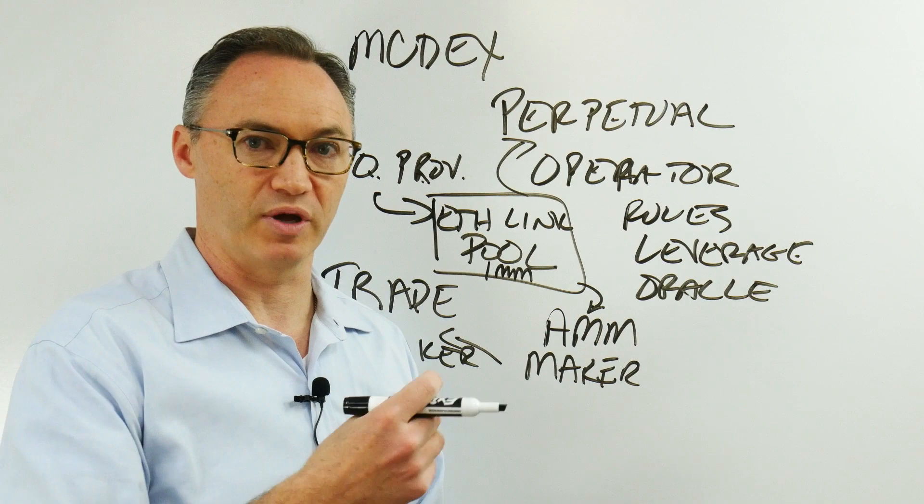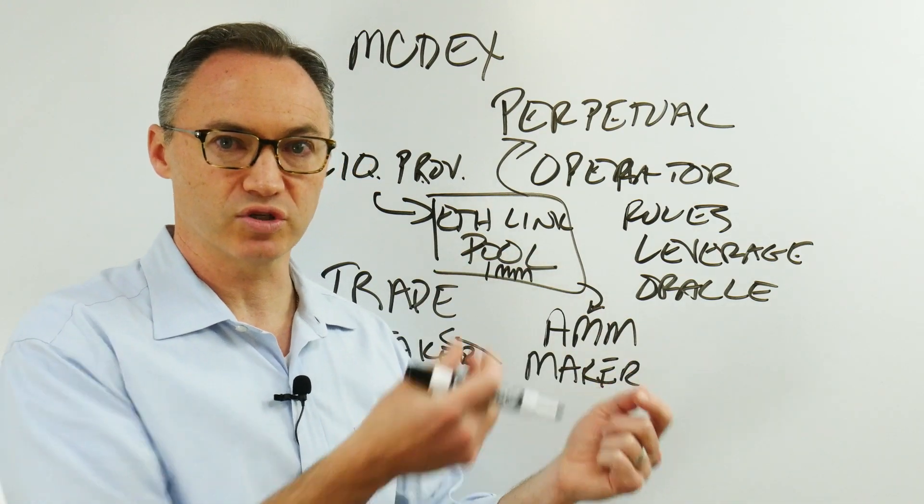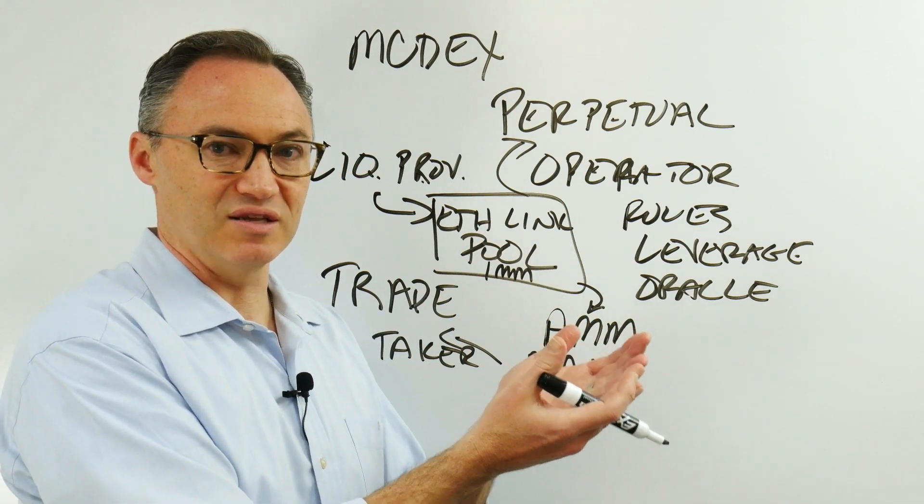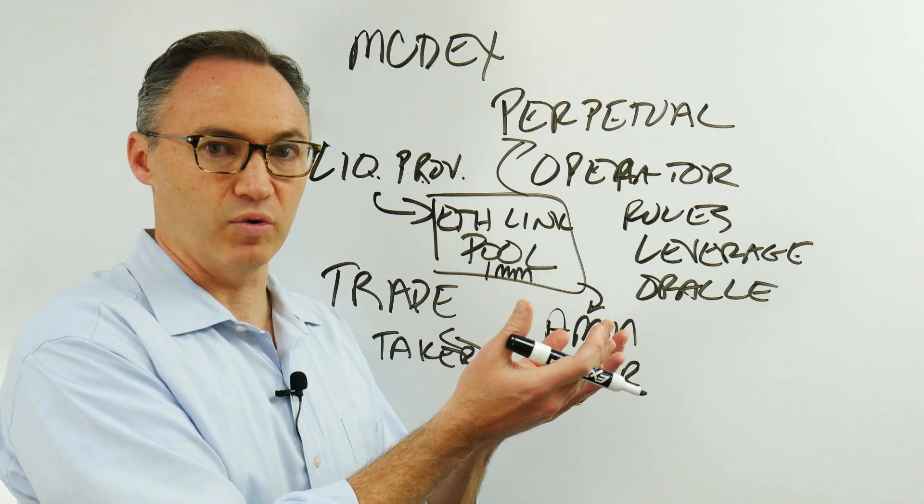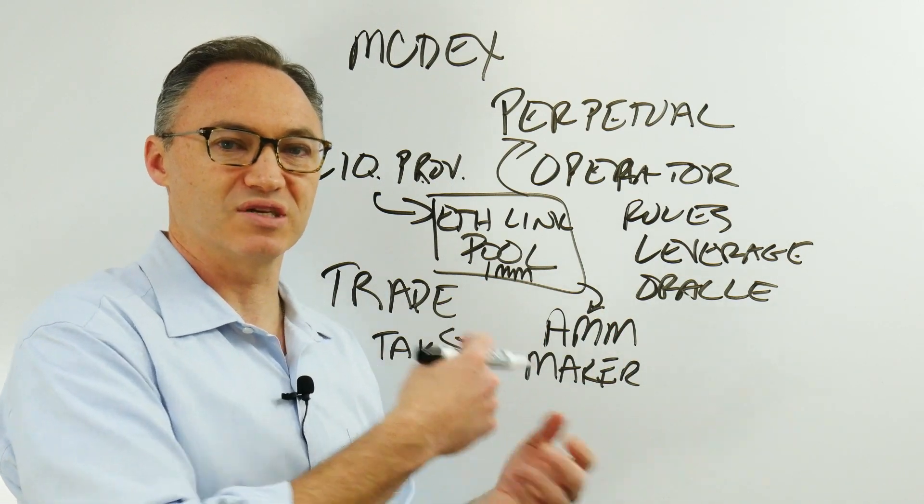It decides based on this oracle and based on the price of the perpetual, based on the longs and the shorts, whether it needs to set the price a little bit higher or lower. It can fund those shorts and those longs, it can give them that incentive.